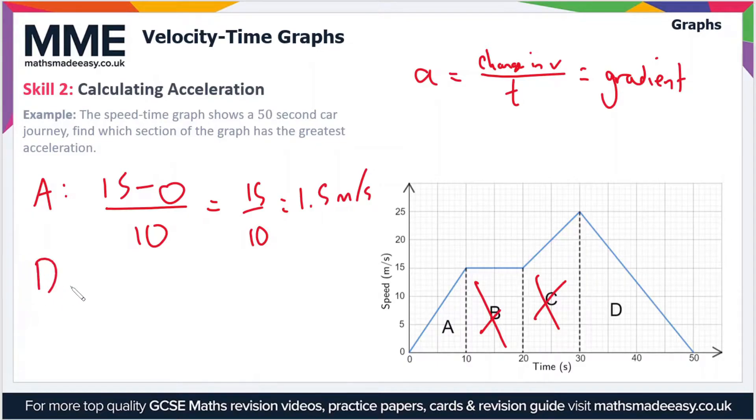In section D, we've gone from a speed of 25 meters per second to a speed of 0 meters per second. So the change in velocity is 25 minus 0, divided by the time span, which is from 30 to 50 seconds—that's 20 seconds in total. That gives us 25 divided by 20, or 1.25 meters per second. As you can see, the steepest section or the greatest acceleration is section A, so therefore the answer would be A.